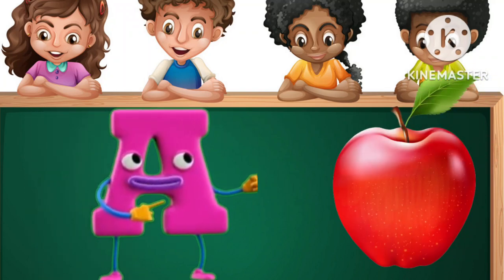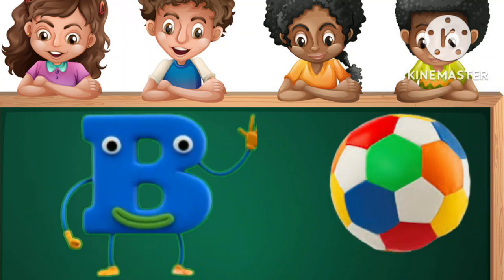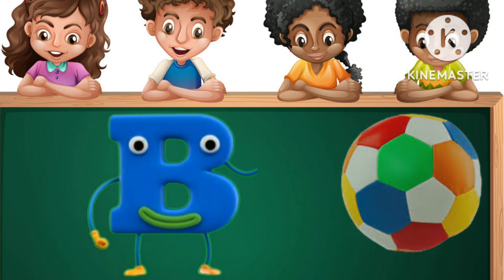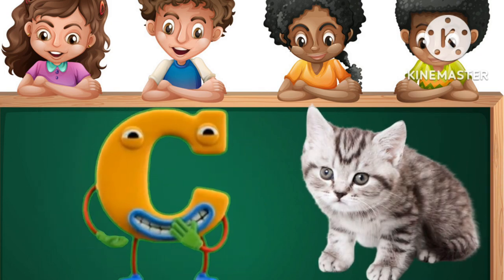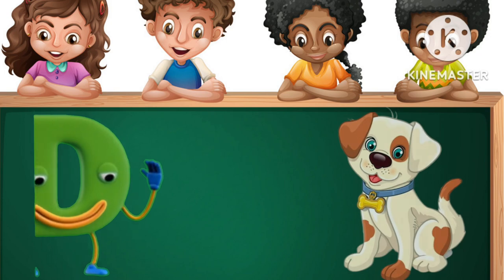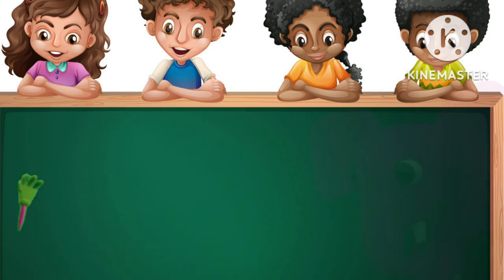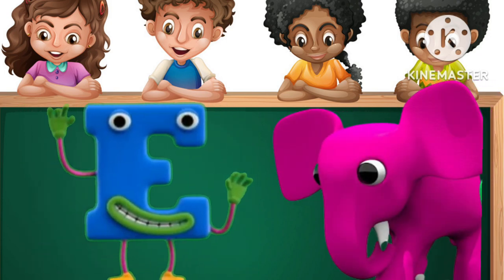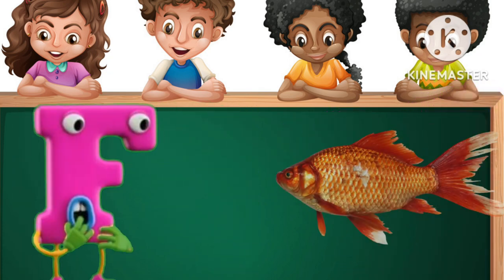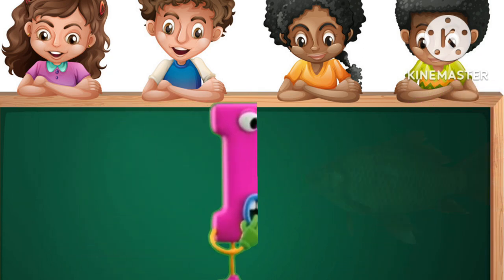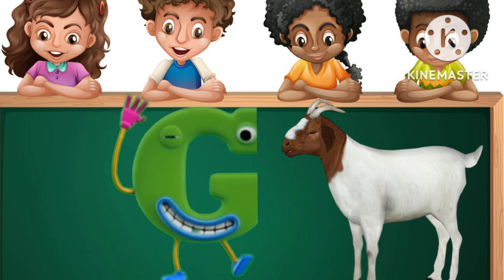A for Apple. B for Ball. C for Cat. D for Dog. E for Elephant. F for Fish. G for Cat.